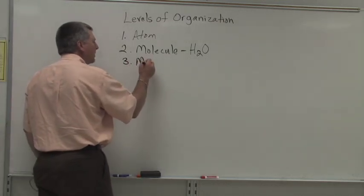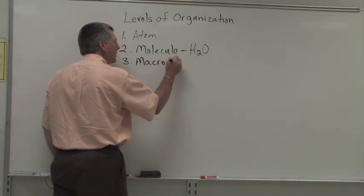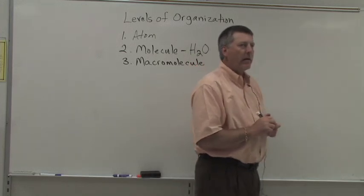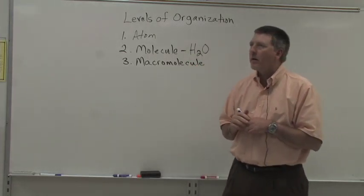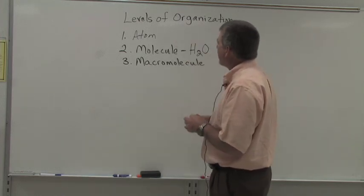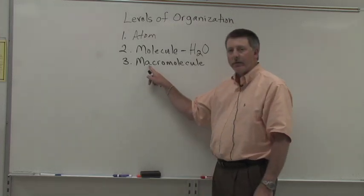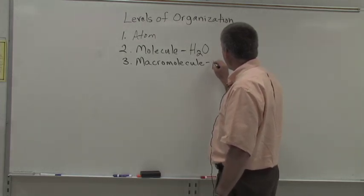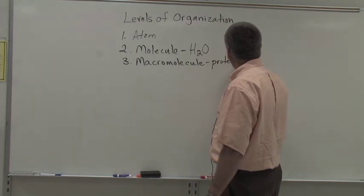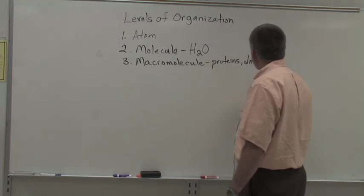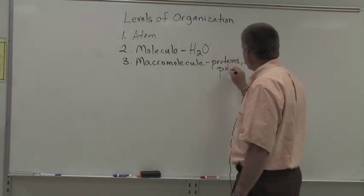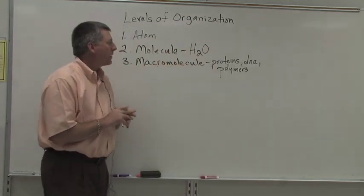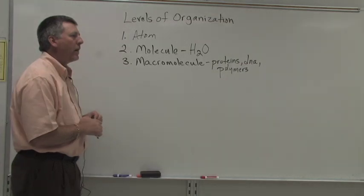The next level of organization I like to include is the macromolecule level. The macromolecule level just recognizes that there are some molecules especially important to life that are very large molecules. That's what macro means, large. Macromolecules include things like proteins, DNA, polymers. That's in an upcoming chapter where we'll learn about the macromolecules important to life.